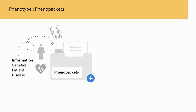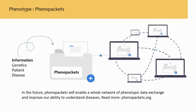Moreover, metadata conversion can also be automated using Phenopackets, a new standard for exchanging structured information on diseases, patients and genetic information. Using Phenopackets requires specific expertise, and the central EGA is working on providing its dataset metadata in this new format to help large-scale automated processing.